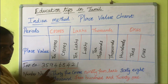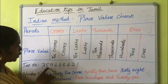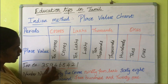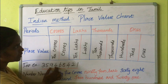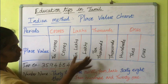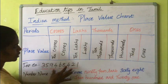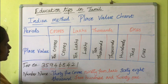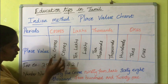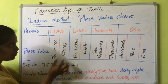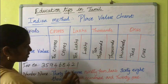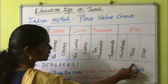Next is lakh and ten lakh. Then crore and ten crore. So for example, here we have a number placed in the chart. Reading it: 35 crores, 94 lakhs, 68,421.